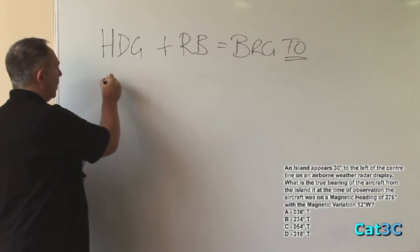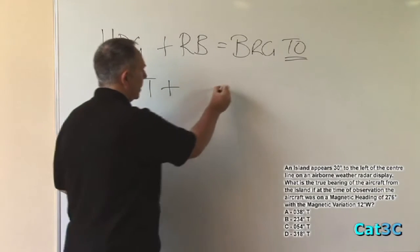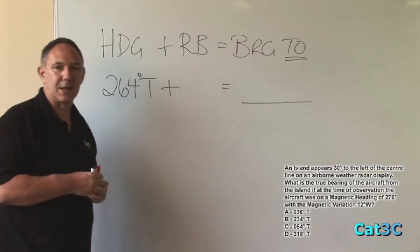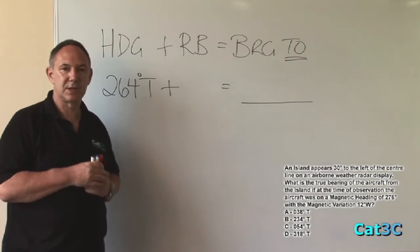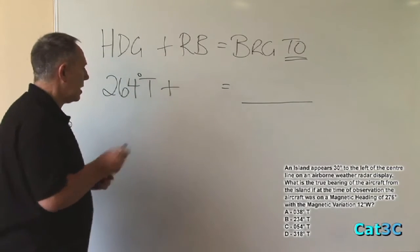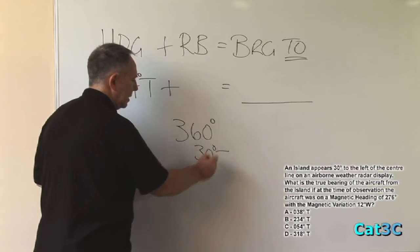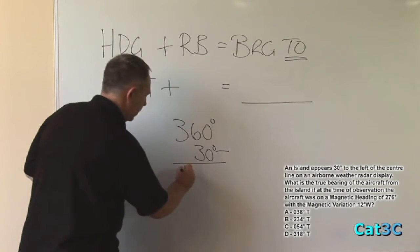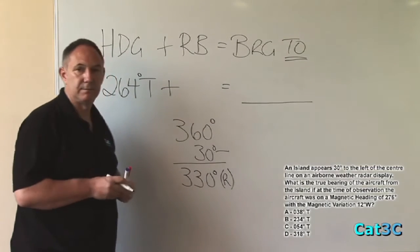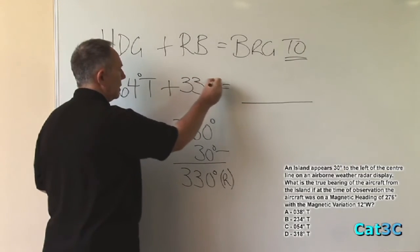Now, we know the heading of the aircraft is 264 degrees true. So we need to find the relative bearing in order to find the bearing to. Now, the relative bearing, in this case, states 30 degrees to the left of the centre line. Now, relative bearings are always measured to the right. So, 360 degrees of circle minus 30 degrees to the left gives us a relative bearing of 330 degrees. The relative bearing, sometimes written with an R after the numbers, in this case is 330 degrees.